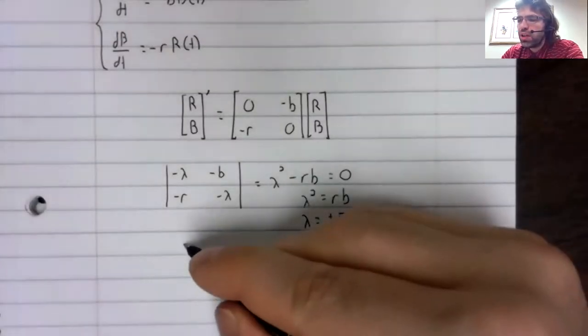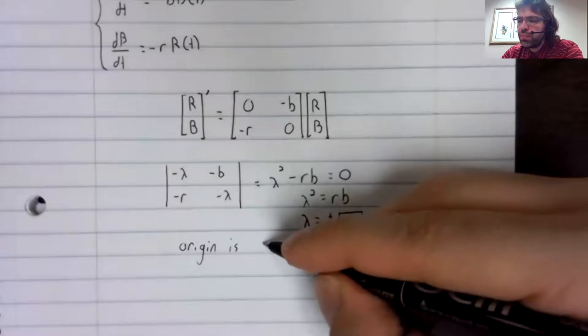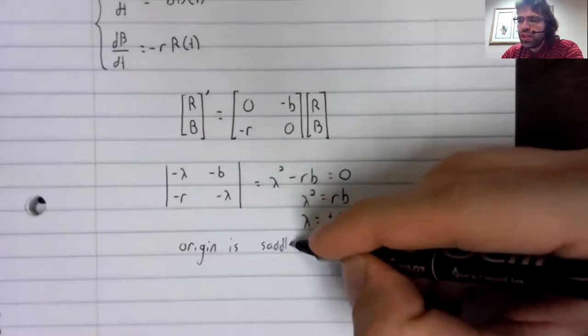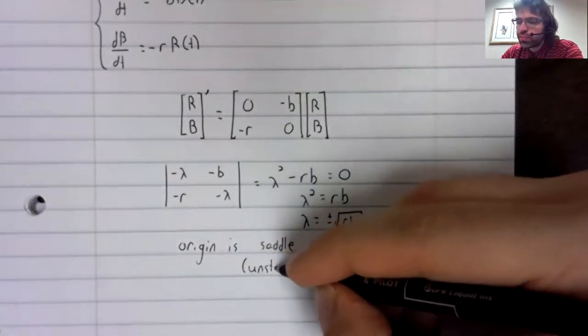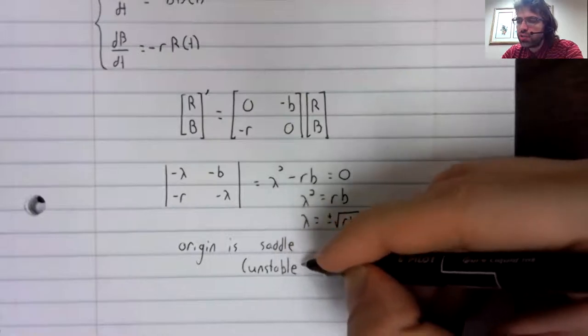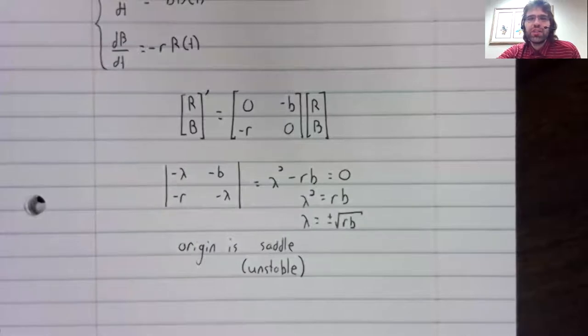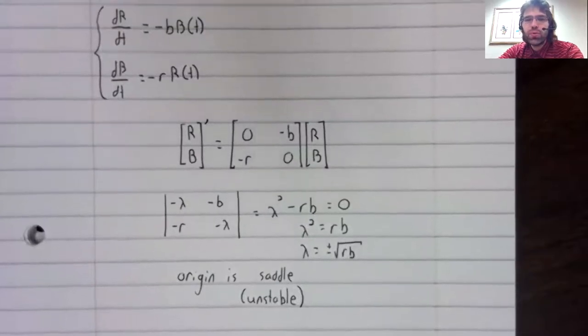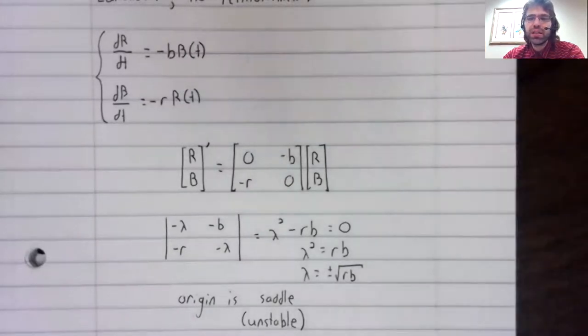One positive, the other negative. The origin is a saddle, and as such, it is unstable. Which seems right. I mean, you don't often hear about two armies engaged in traditional conflict mutually annihilating each other. It would be quite an unusual thing if both R of T and B of T ended up being zero.